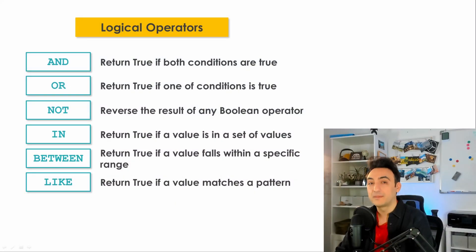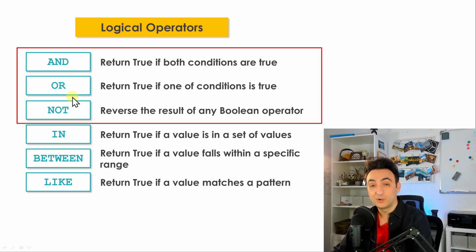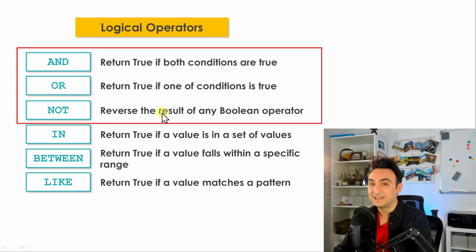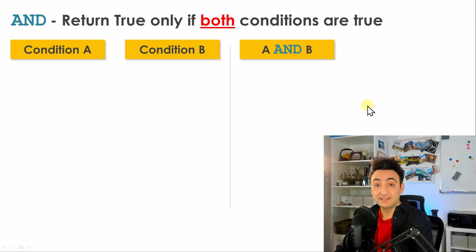Now we're going to talk about the second group of operators you can use inside the WHERE clause — the logical operators. We will focus on those three: AND, OR, and NOT. In the previous examples you learned how to filter your data using only one condition, but in real life scenarios things get more complicated where you have to combine two or more conditions, and to do that you use AND or OR.